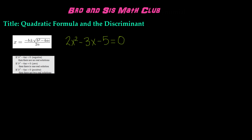Now let's go ahead and find the a, b, and c values of this quadratic equation to determine the discriminant. The a value is always the number in front of the x squared, so in this case a equals 2. The b is the number in front of the x, so in this case b equals negative 3. And c is the constant, which is negative 5 in this quadratic equation.